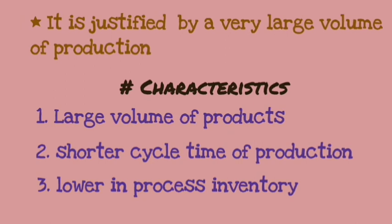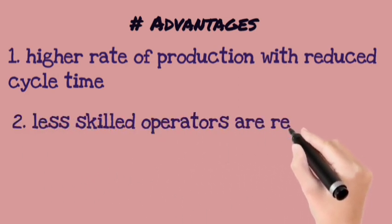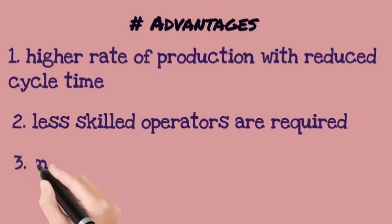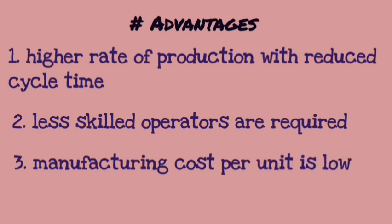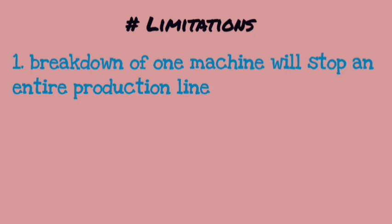Advantages of mass production: First, the rate of production is much higher and cycle time is reduced — cycle time is the time taken to complete one task. Second, we do not need highly skilled operators; less skilled operators are sufficient. Third, the cost per unit is very low. Limitation: If one machine stops working, the whole production line will stop, because each machine is interdependent.